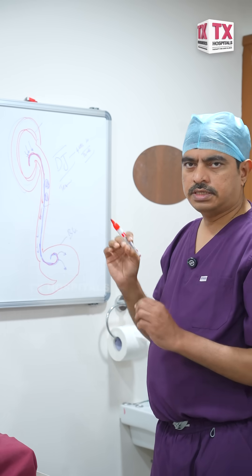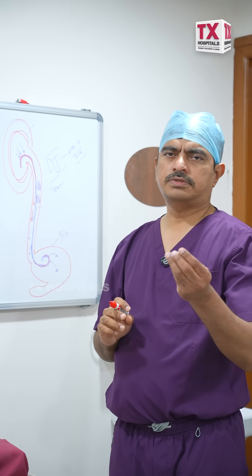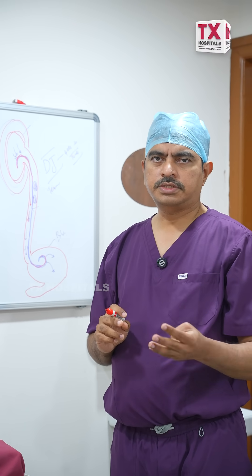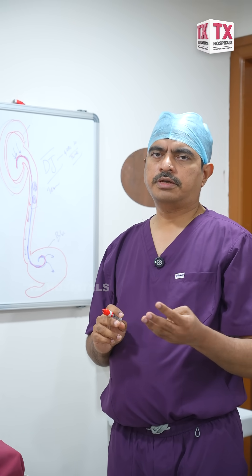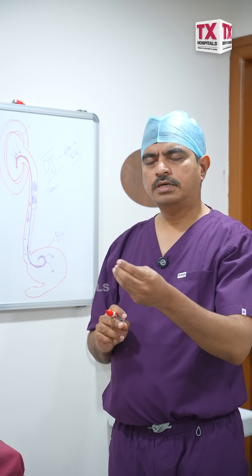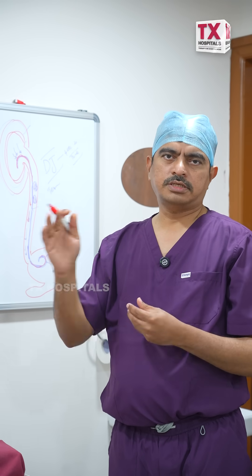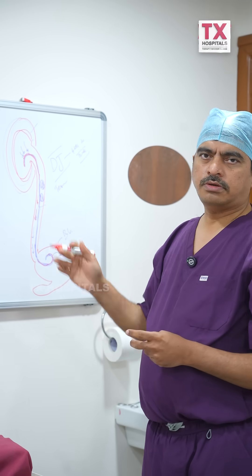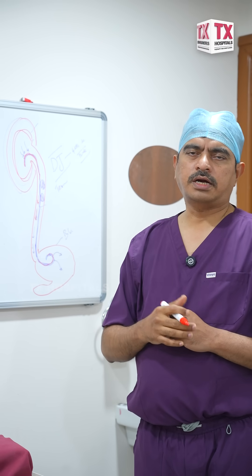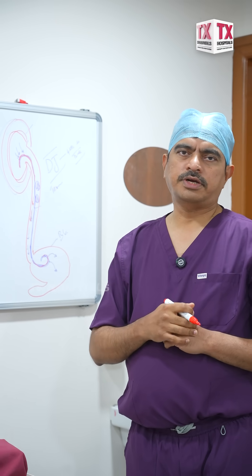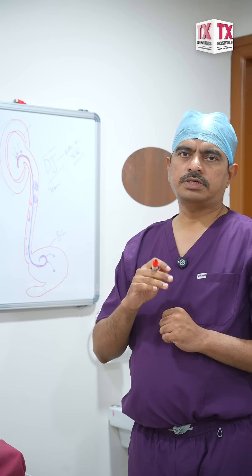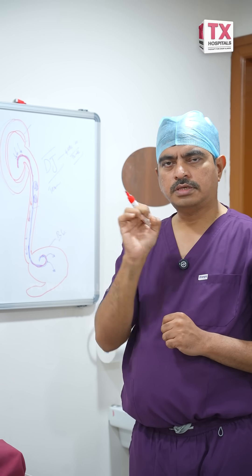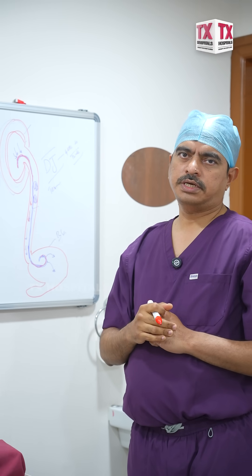Placing the DJ stent is a simple procedure. Sometimes in diabetic patients or pyelonephritic patients, we place the stent and discharge them immediately. Removal of the stent is also a simple procedure — it takes just 5 to 10 minutes. We take the patient to the operation theatre, remove it under local anaesthesia, and send the patient home immediately.